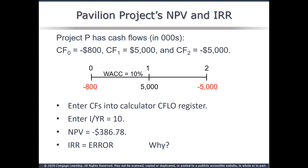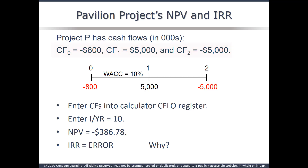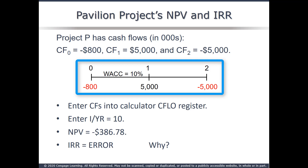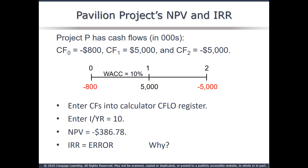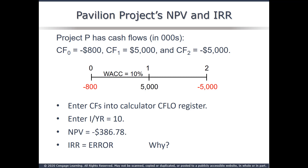As an example of multiple internal rates of return, suppose we have the pavilion project. At time 0, we need to invest $800,000 to build a world's fair pavilion. During the fair, we estimate we'll make $5 million, but it will cost us $5 million to put the land back like it was when the fair closes. These values are shown on the timeline with a cost of capital of 10%. Solving for NPV, we get negative $386,780. But IRR results in an error — two sign changes.